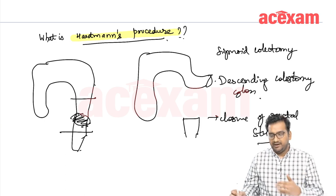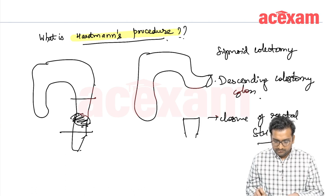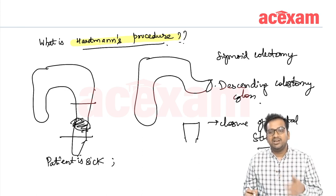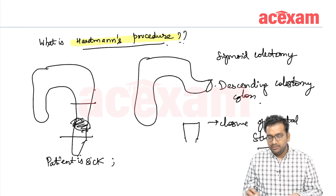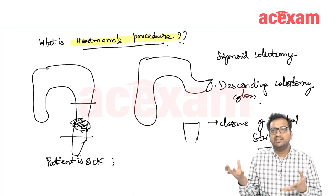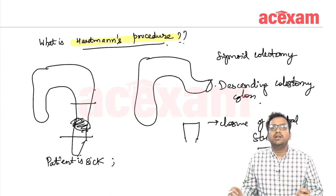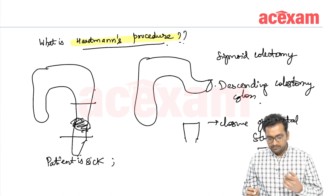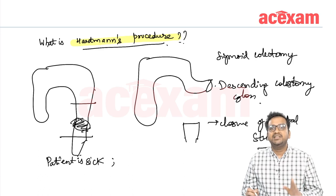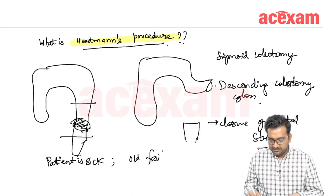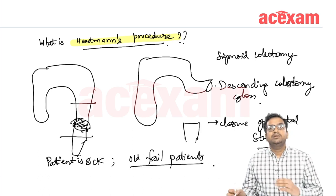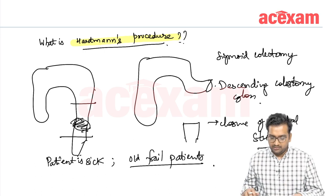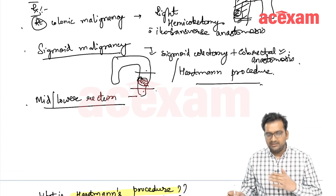Why is the Hartmann procedure important and why are we not anastomosing in this case? If the patient is sick, we want to relieve the obstruction very fast, and the large intestine contains a lot of fecal matter that we want to drain outside. This also decreases the chances of anastomotic leak because the proximal bowel is very much dilated. So in old, frail, sick patients or those with poor anal tone, we generally prefer the Hartmann procedure. In young patients with obstruction, we can go ahead with primary colorectal anastomosis, but in emergency cases, the Hartmann procedure is generally performed.